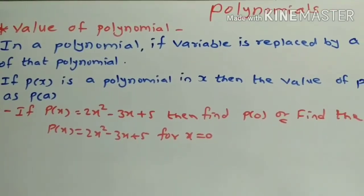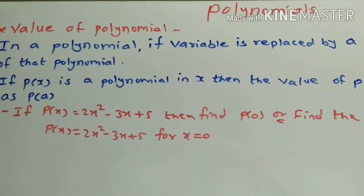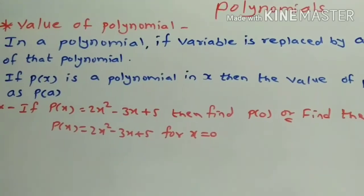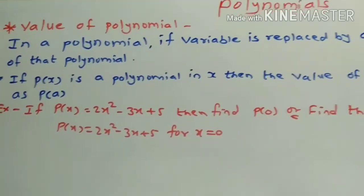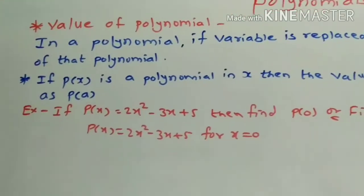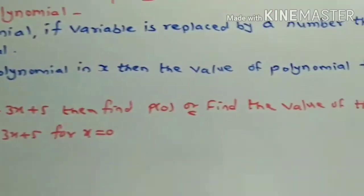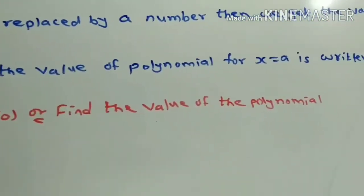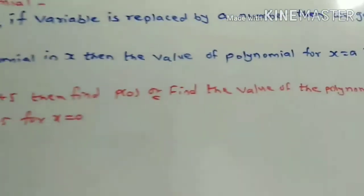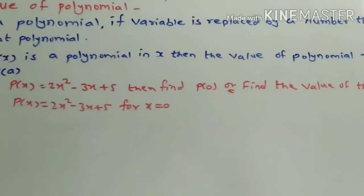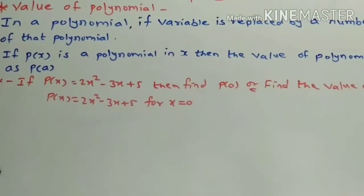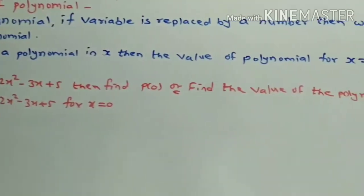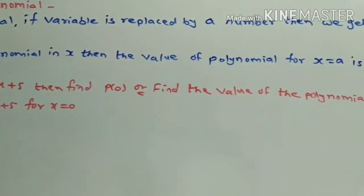Students, today we will start the next topic of the chapter polynomials. The topic is value of the polynomial. In a polynomial, if the variable is replaced by a number, then we get the value of that polynomial. For example, if p(x) is the polynomial in x, then the value of the polynomial for x equal to a is written as p(a).